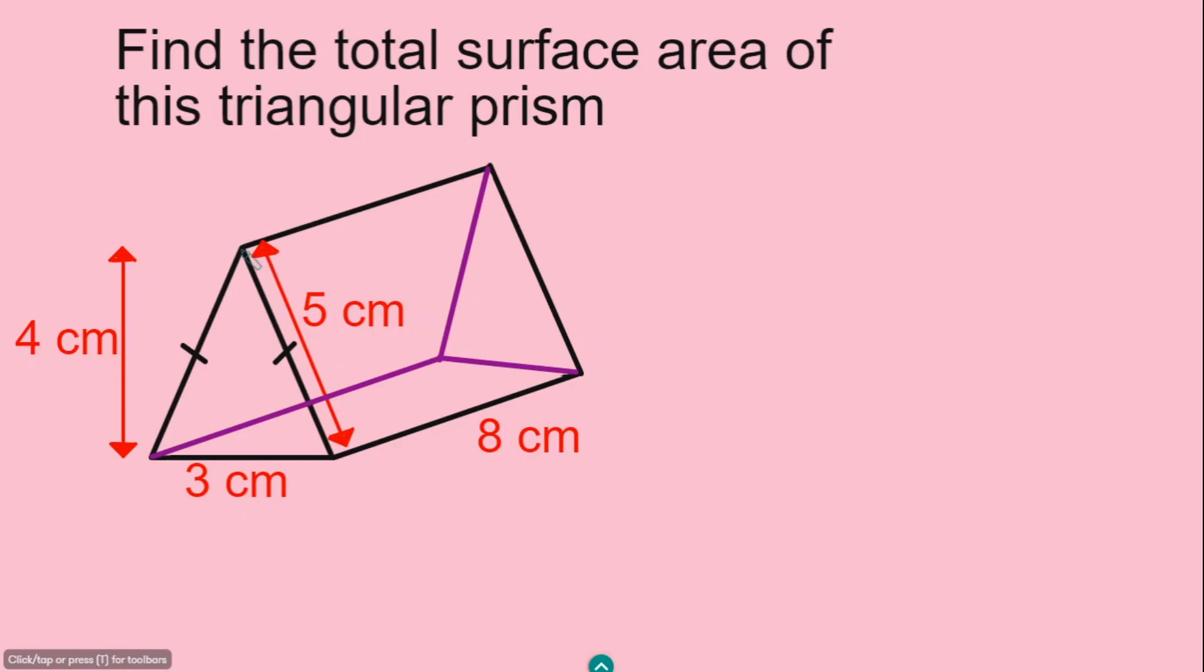You also have a rectangle facing us here in the front, another rectangle here at the back, and then another rectangle here at the base. Now, to find the total surface area, we're going to find the area of each face and then add them up.